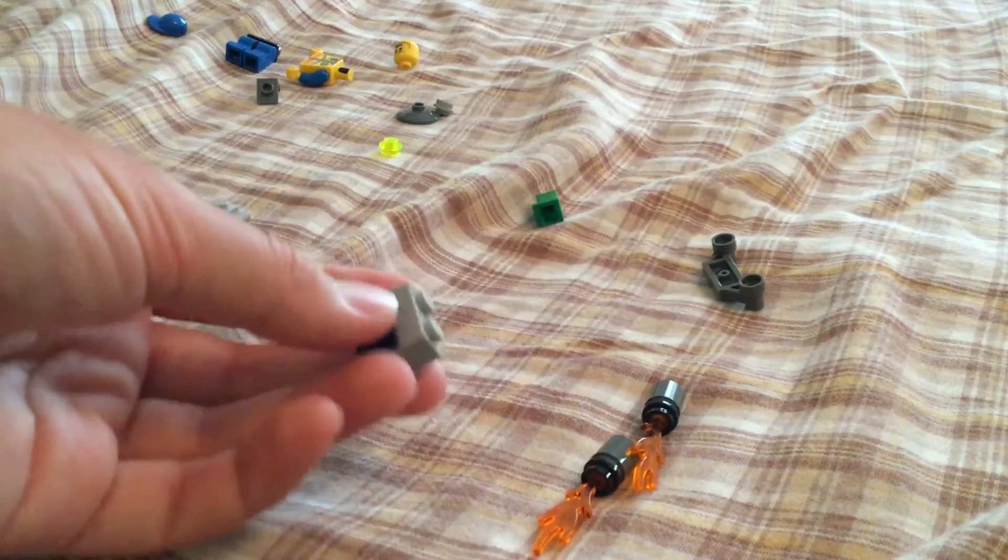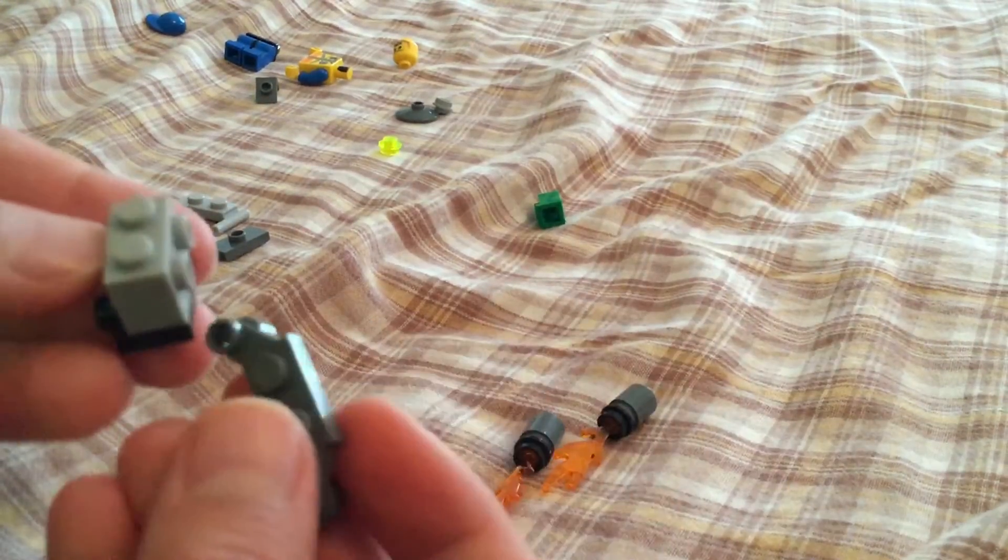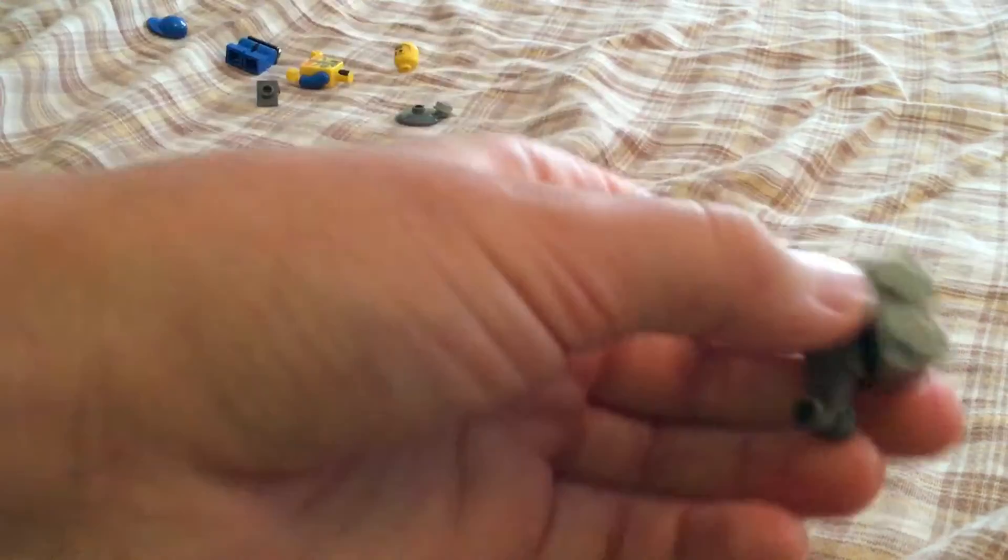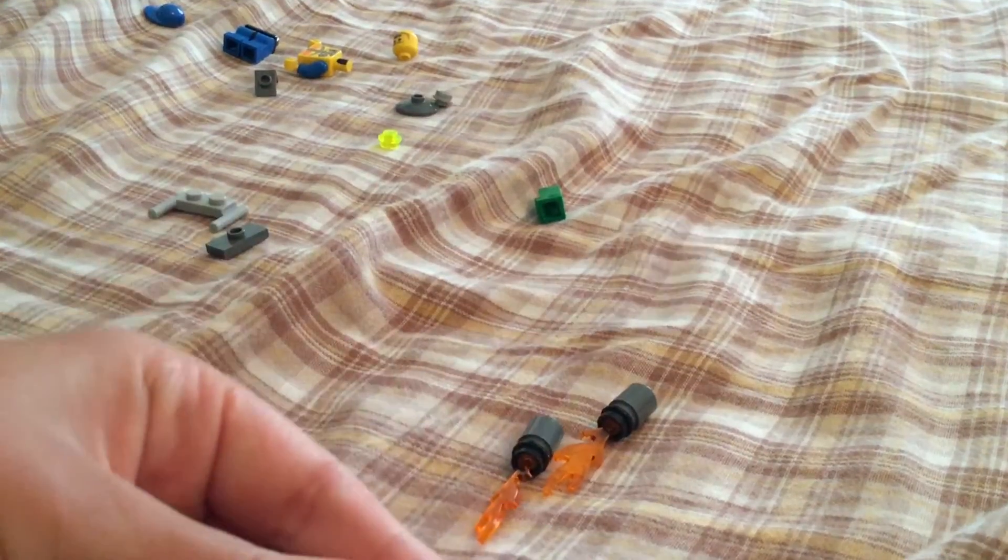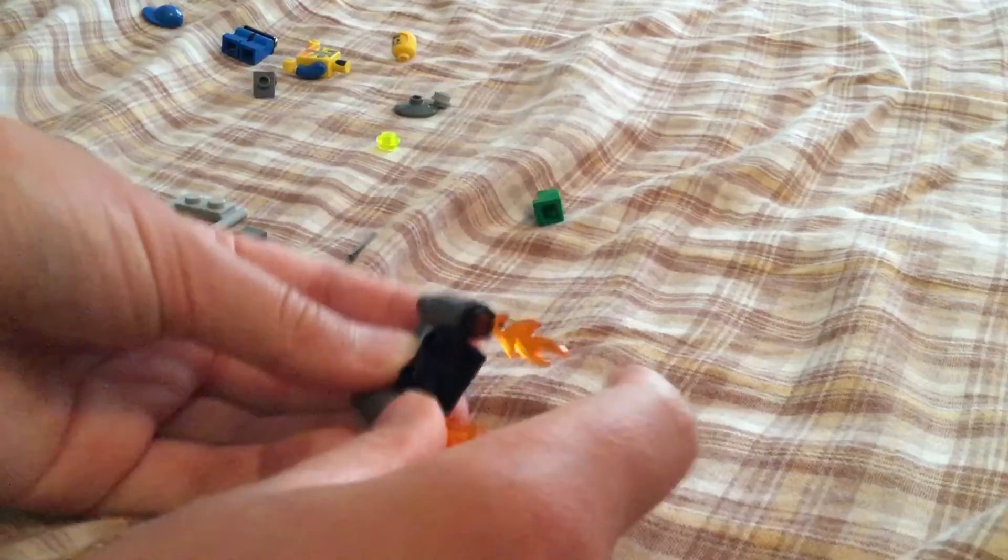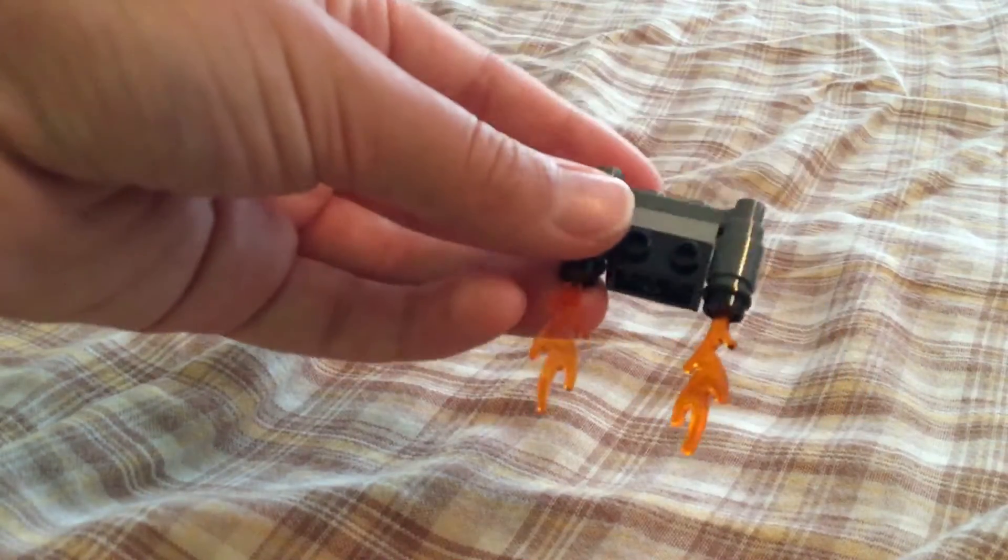Then you're going to get this 1x4 piece and put it on the top like this. Then you can take our rocket thrusters and put them on so you have something like this.